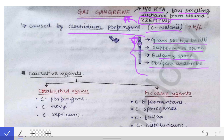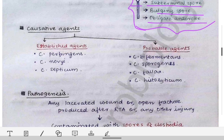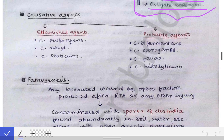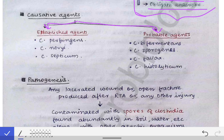Gas gangrene is not caused by a single pathogen but by a group of pathogens. When asked about causative agents, you must write them under two headings: established agents and probable agents. The established agents are always present, while the probable agents are possibly present, so you must cover both categories.